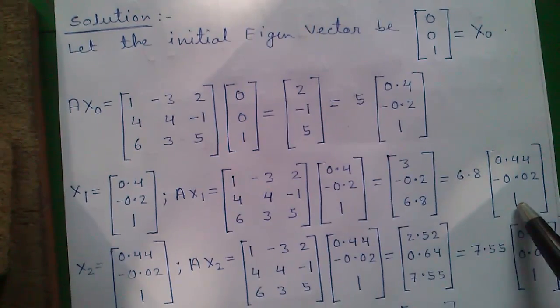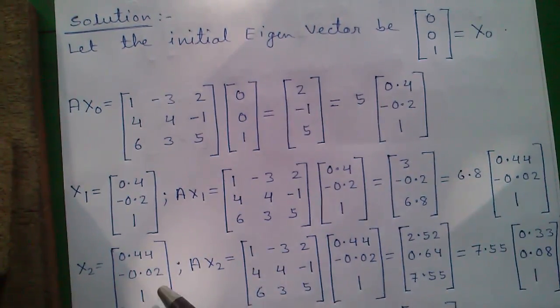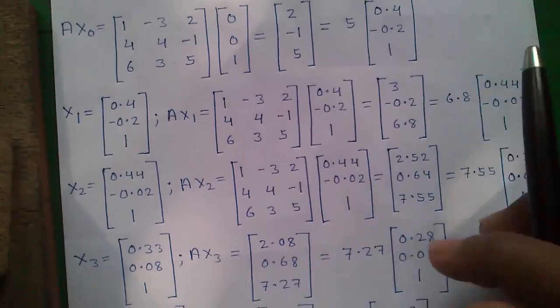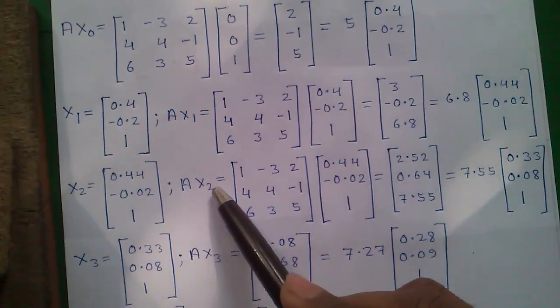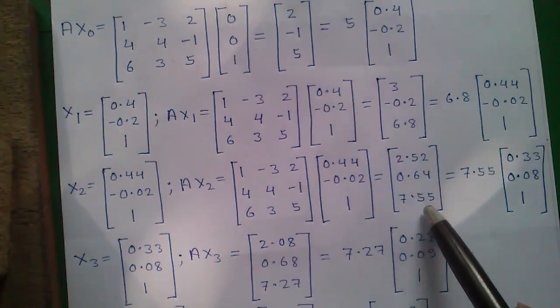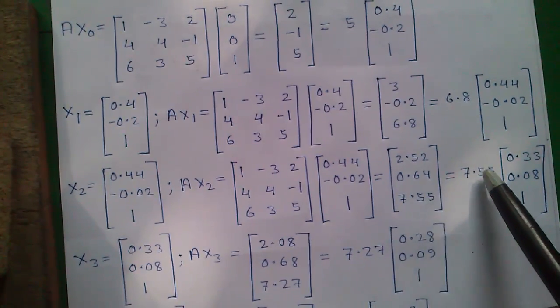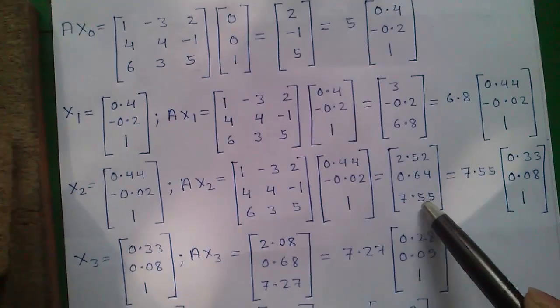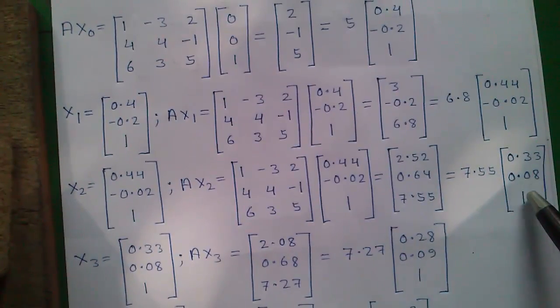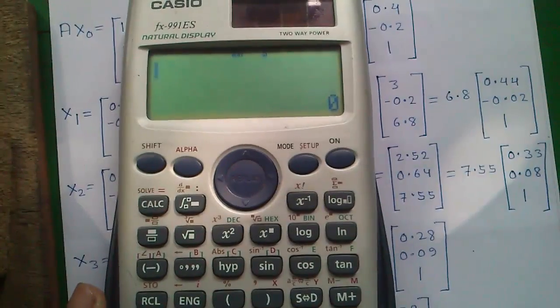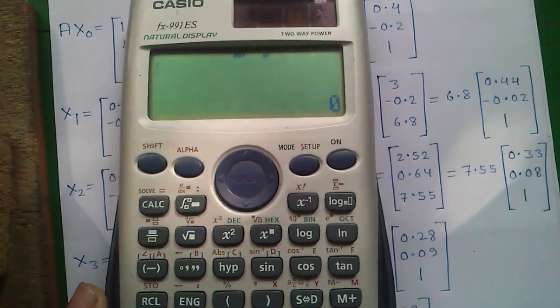This will become our x2 value. Again same process, A into x2, and the numerically largest value is 7.5 which will be taken out. All the numbers will be divided by 7.5. So this was the normal pen and paper method, and now I will tell you how to do it using your scientific calculator.